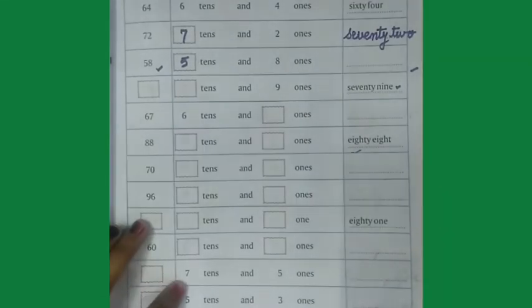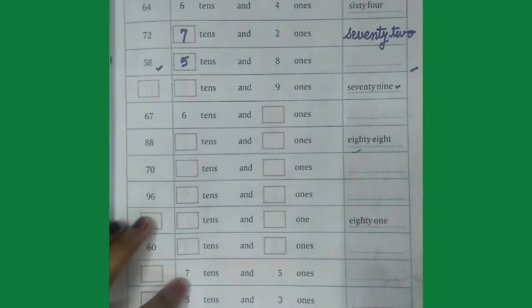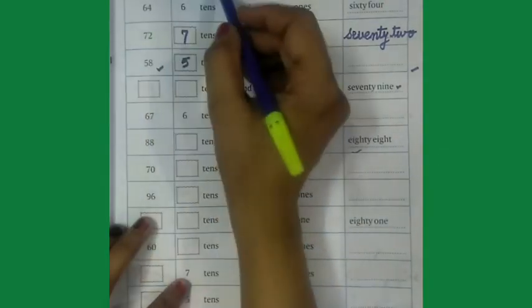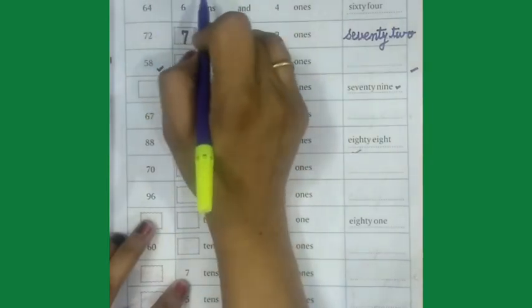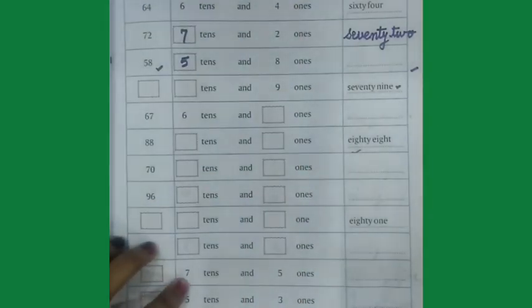Hello children, today we are going to do page number 77 in our maths book, complete the table. Let's get started.